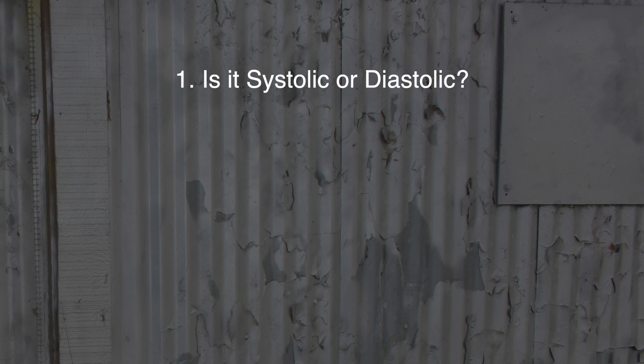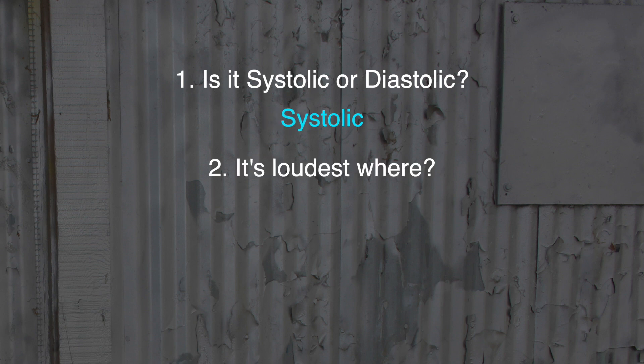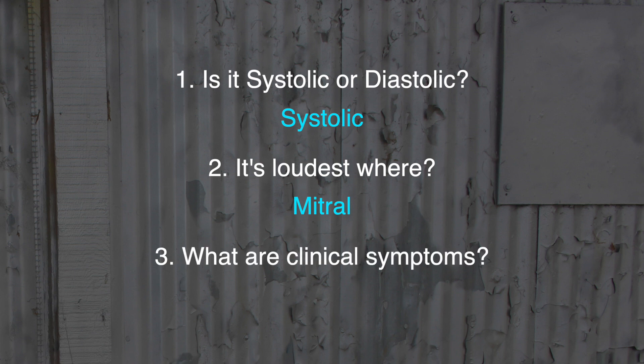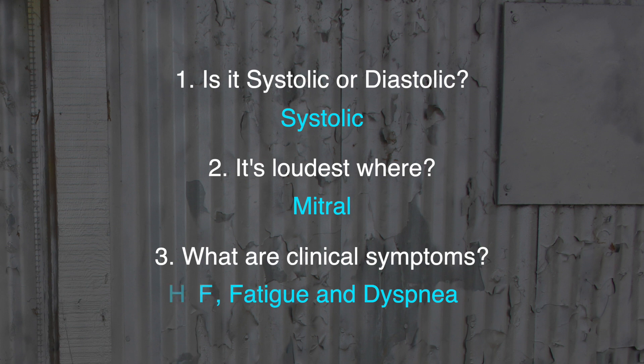Now let's listen to mitral regurgitation. Is it systolic or diastolic? It's systolic, and it's loudest in the mitral area — you hear a hollow systolic murmur. What are the clinical symptoms? It can cause heart failure, fatigue, and dyspnea. The etiology can be from endocarditis, congenital heart disease, or rheumatic heart disease.